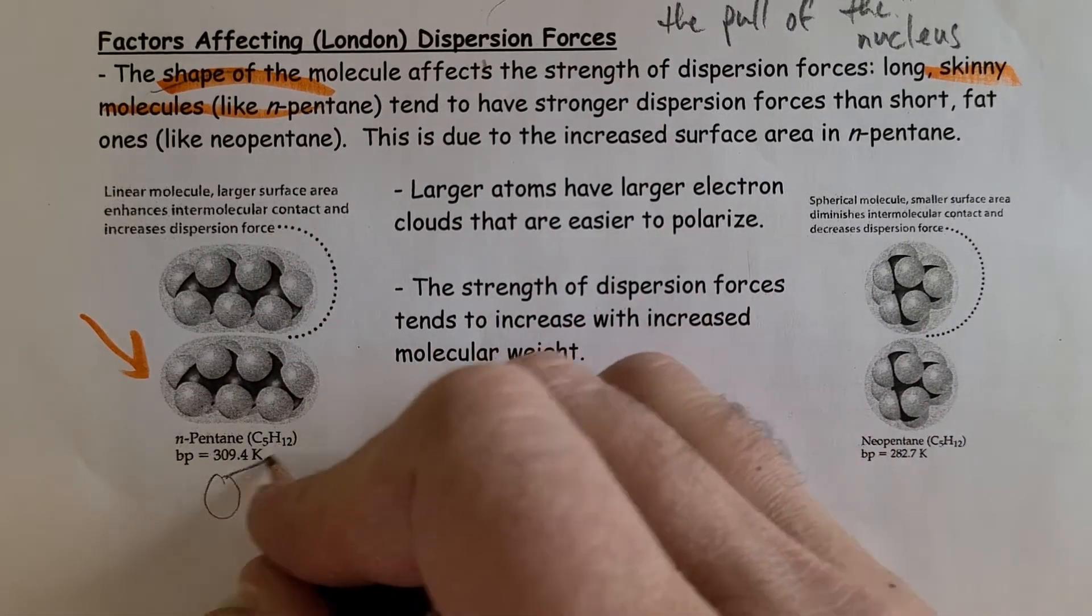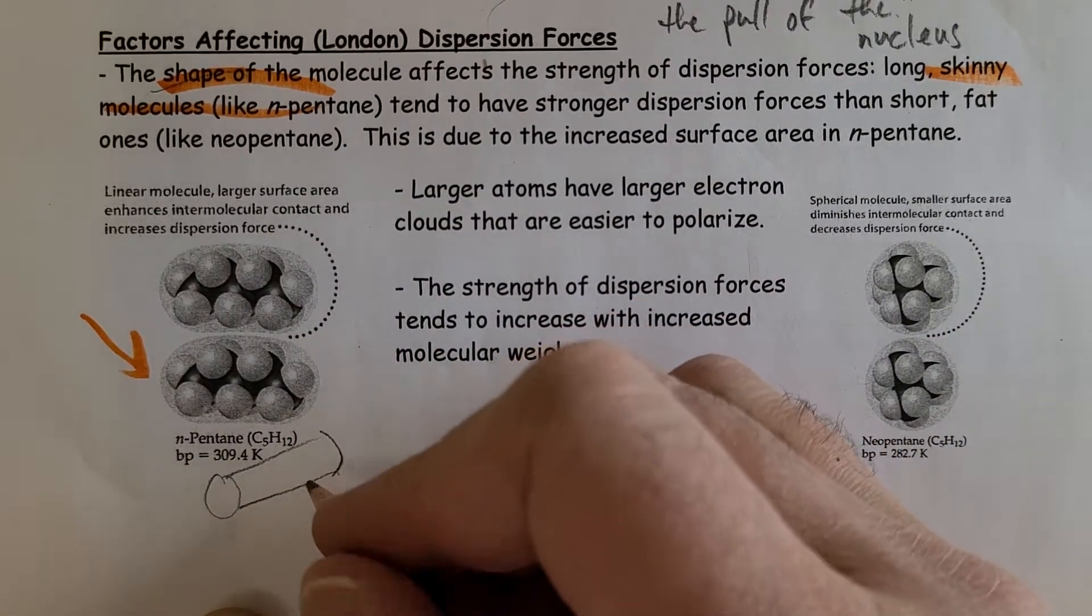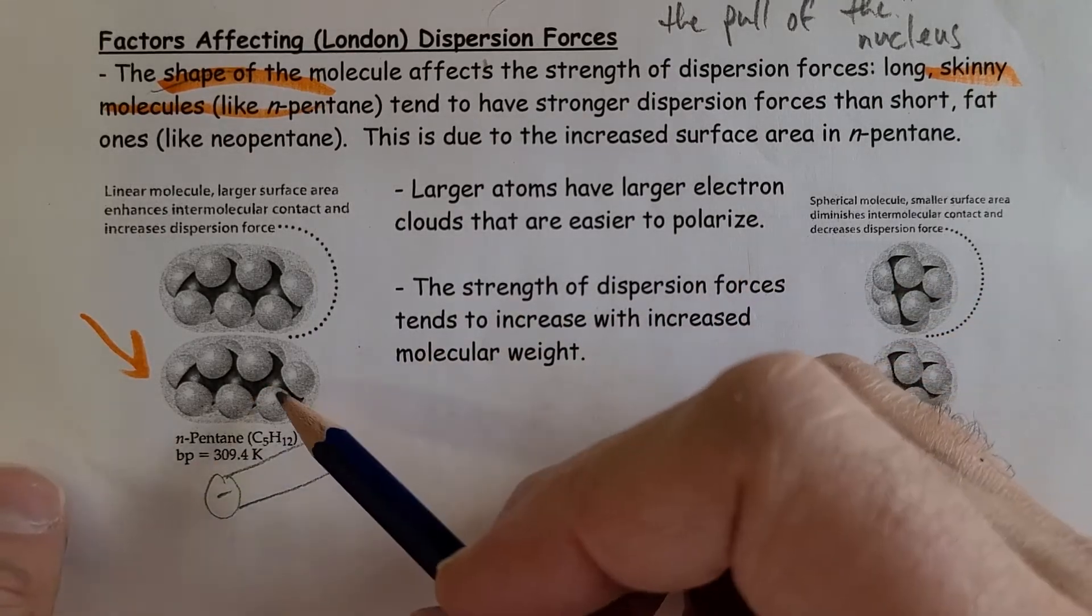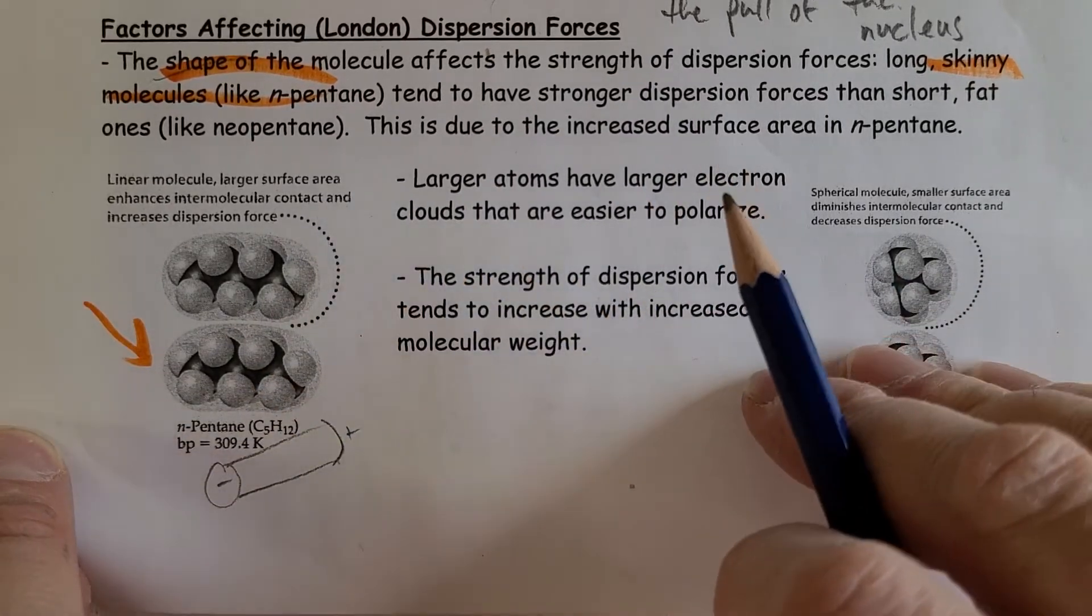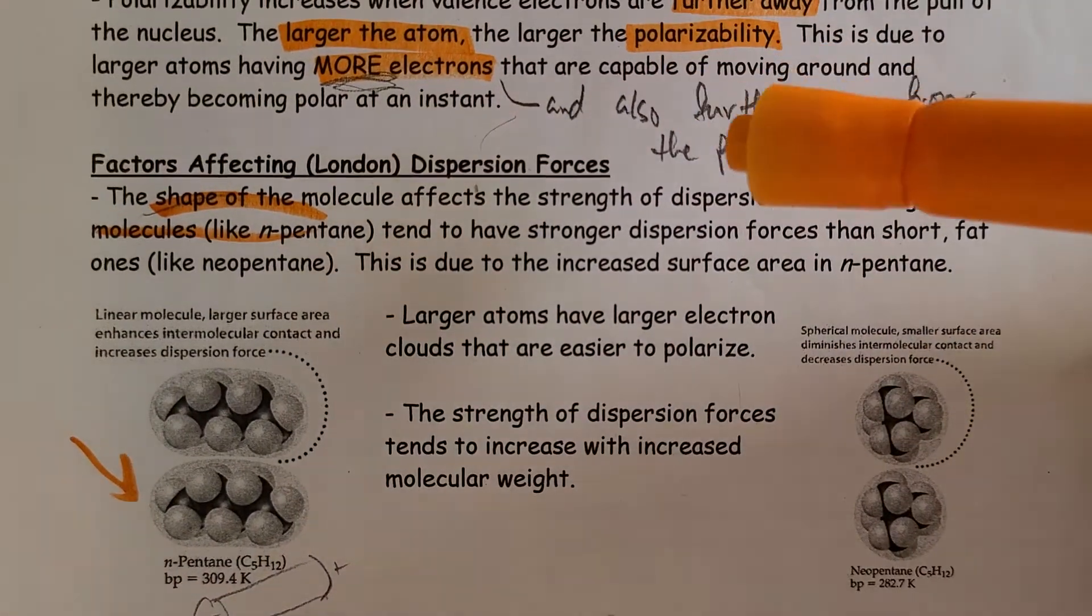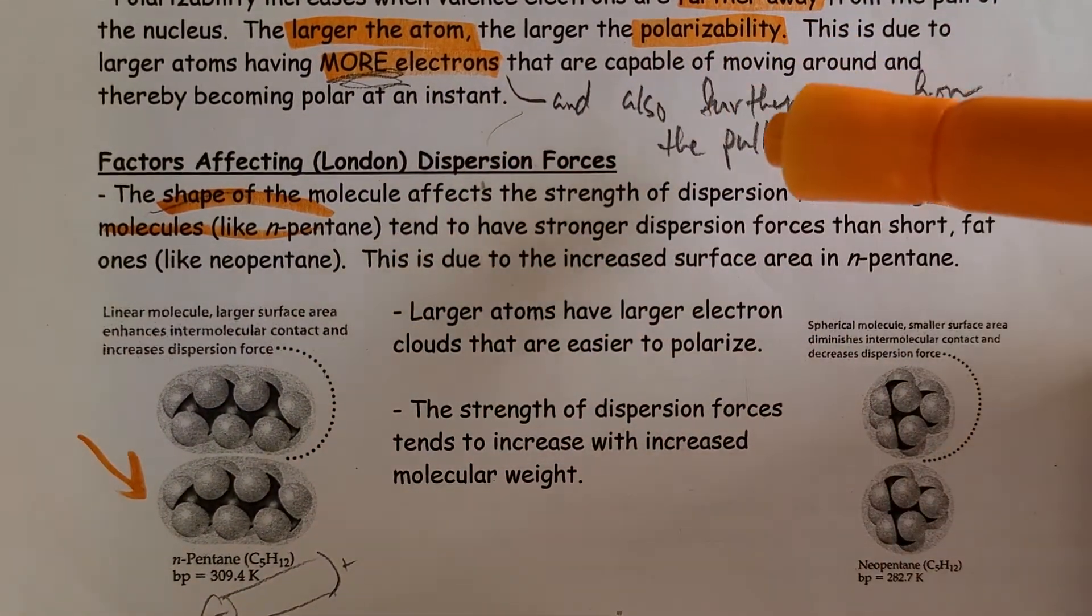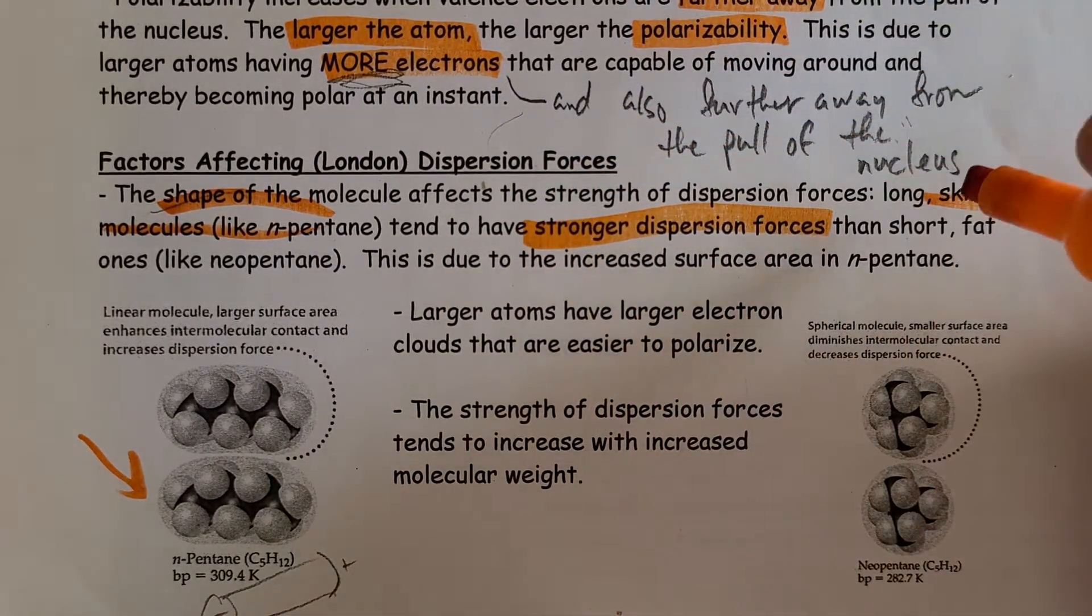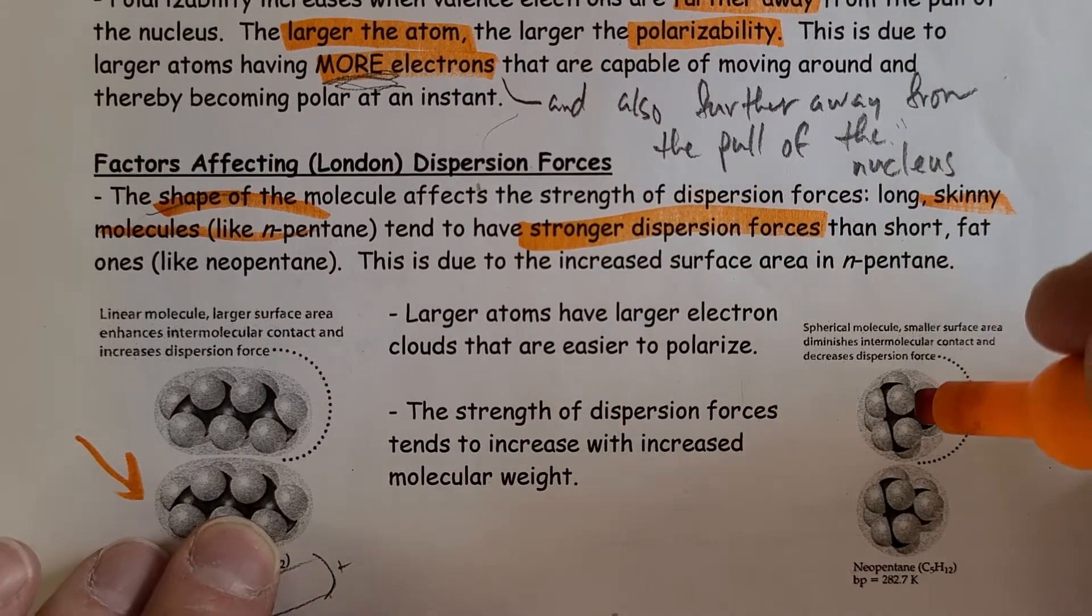It makes sense, because in real life, all of our batteries are cylindrical shapes. One side positive, one side negative. So if you can separate the charges easily, that means it's going to be polar. Long skinny cylindrical type molecules have stronger dispersion forces than shorter spherical ones.